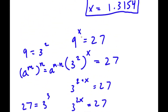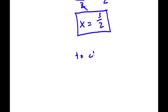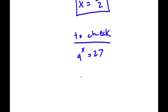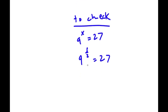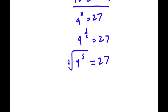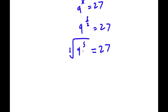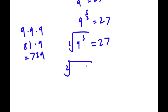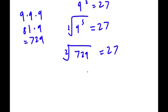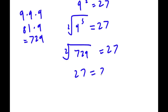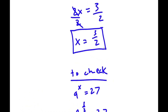Let me go ahead and plug this in for x to verify. We have 9 to the power of 3 over 2 is equal to 27. I can rewrite this as the square root of 9 to the power of 3 is equal to 27. Now 9 to the power of 3 is 9 times 9 times 9 — 9 times 9 is 81, so 81 times 9 equals 729. So the square root of 729 is equal to 27. And the square root of 729 is indeed 27, so our solution is correct.